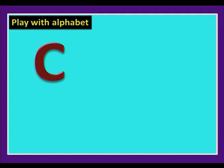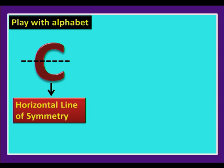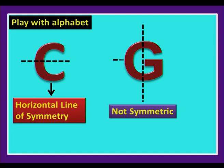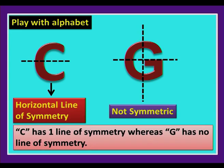Alphabet C has a horizontal line of symmetry — drawing a horizontal line and folding along it gives exact symmetry. Now consider alphabet G — drawing a vertical line does not give congruent parts, and drawing horizontally also shows it is not symmetric. So C has one line of symmetry, whereas G has no line of symmetry.